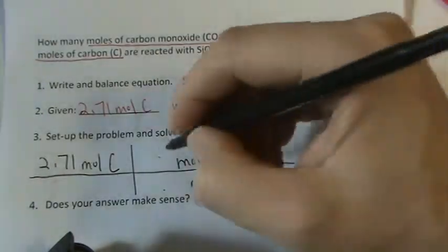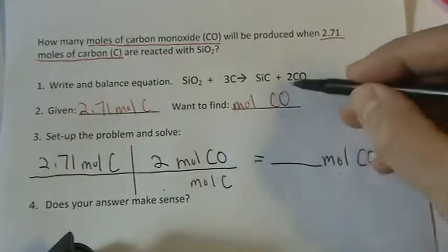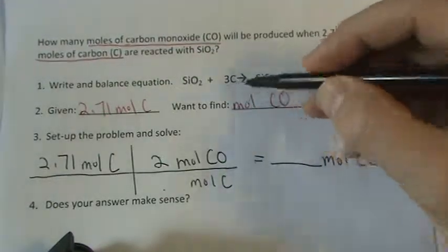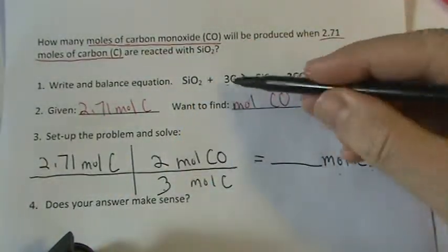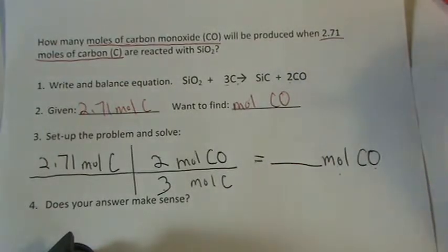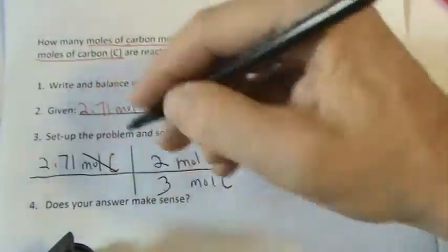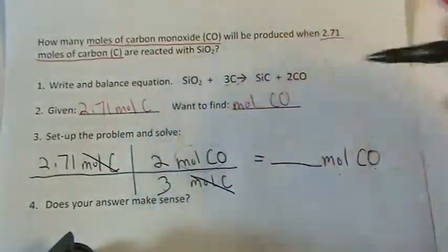So CO has a 2 in front of it, and carbon has a 3. So every 3 moles, I get 2 moles of this. Now I can cancel out moles, and I'll be left with this.